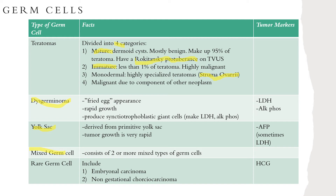Dysgerminomas make up 2 percent of overall ovarian neoplasms but 33 percent of malignant germ cells. They are common in young women, considered malignant, but the degree of histologic atypia is very variable — only about one-third behave aggressively. On histology, these present with the fried egg appearance: large vesicular cells with clear cytoplasm and a centrally placed nucleus. They can present with rapid growth, so question stems may refer to abdominal enlargement. The tumors produce syncytiotrophoblastic giant cells, which make LDH and ALP, so both can be elevated.